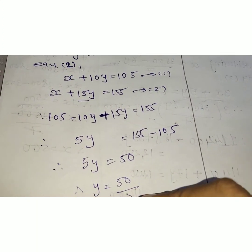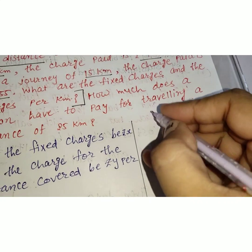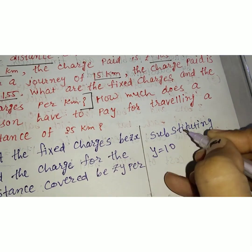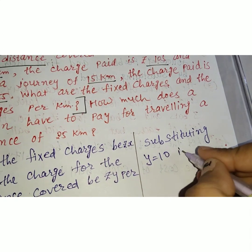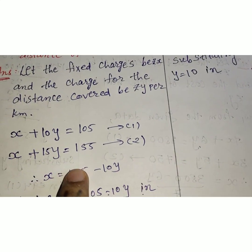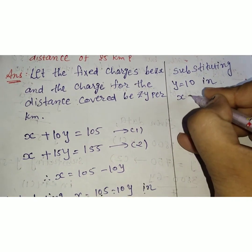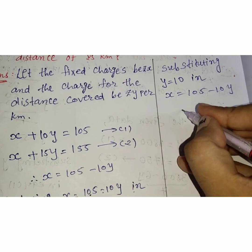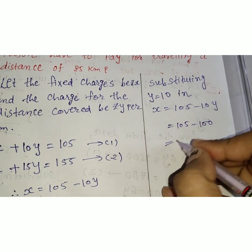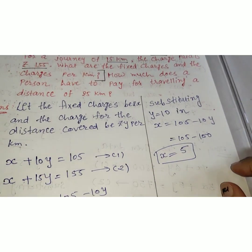Therefore y = 50 ÷ 5 = 10. So y = 10. Now substituting y = 10 in x = 105 − 10y: x = 105 − 10 × 10 = 105 − 100 = 5. So x = 5. We have found both x and y: the fixed charge is Rs. 5 and the charge per km is Rs. 10.